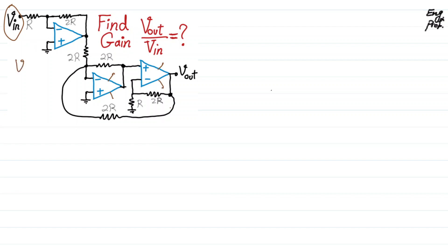As a result, the virtual short principle — which states that V-positive equals V-negative at the input terminals of each op-amp — is valid for op-amps one, two, and three. Now from Vin, we can go to V1. As you can see, from Vin to V1, you simply have an inverting amplifier.